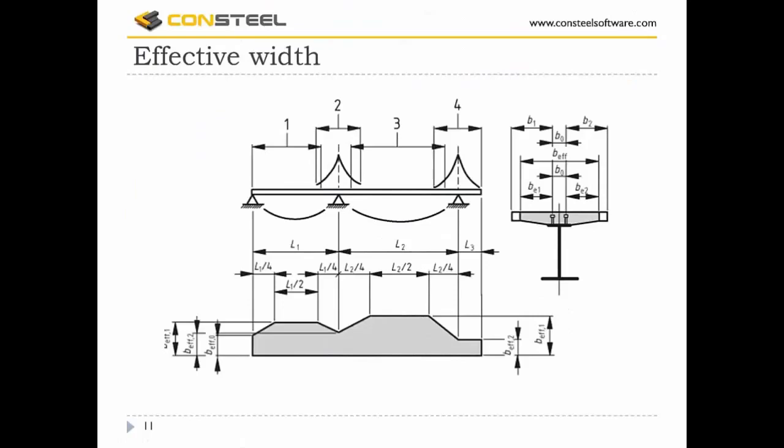The next step is to assess the width of the flange available to act compositely with the steel section. Eurocode provides methods for calculating the effective width. During elastic global analysis, a constant effective width is assumed over the whole of each span, while for design purposes this effective breadth varies along each span. This will be discussed in more detail later.